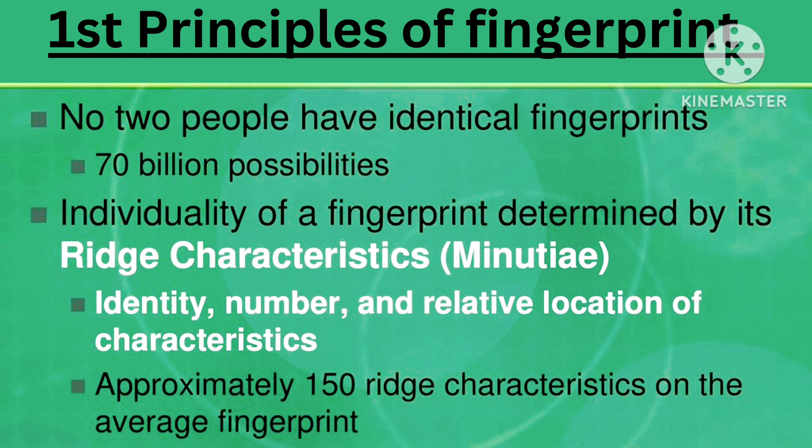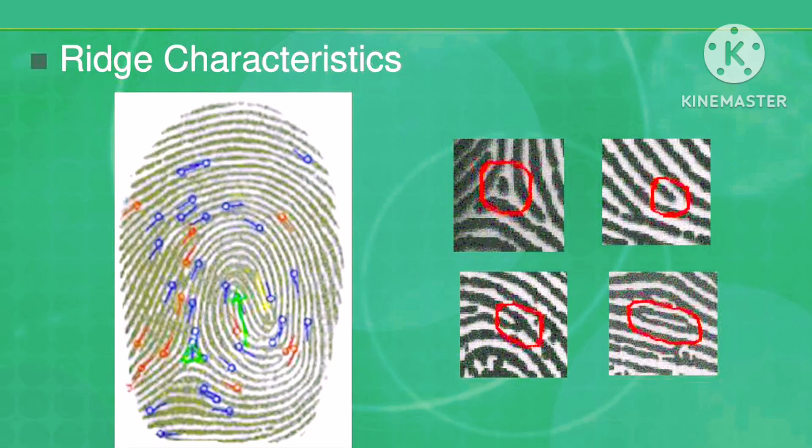The individuality of a fingerprint is determined by its ridge characteristics — specifically the identity, number, and relative location of those characteristics. There are approximately 150 ridge characteristics on the average fingerprint, as shown here.